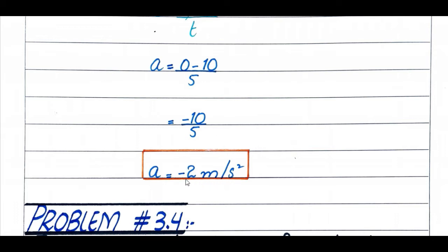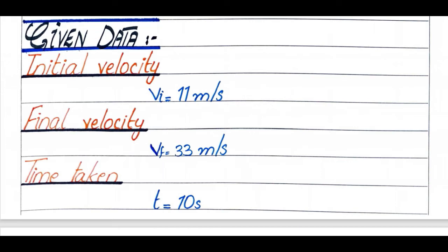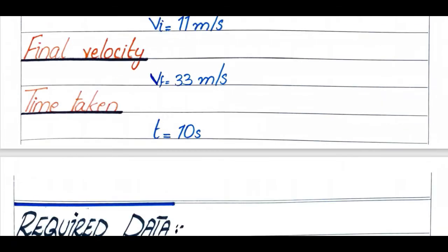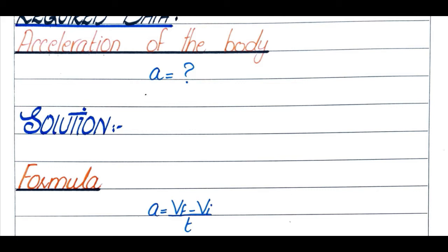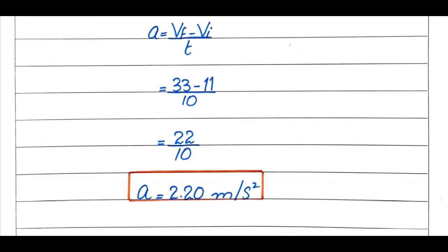Problem number 3.4: Find the acceleration of a body whose velocity increases from 11 m/s to 33 m/s in 10 seconds. Initial velocity is 11 m/s, final velocity is 33 m/s, time is 10 seconds. Using formula a = (vf − vi) / t and putting the values, we get the acceleration of 2.20 m/s².